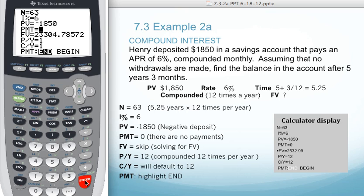We are not making any payments. We'll skip future value for now and come back to it. The payments per year and the compounding periods per year are going to be 12. Going back up to future value, you can see it changed our compounding periods per year to match with the payments per year.